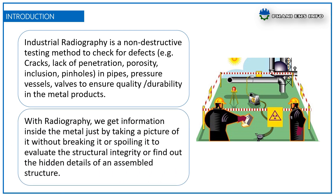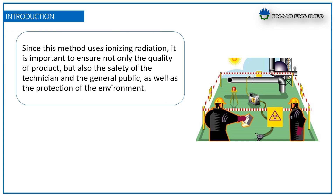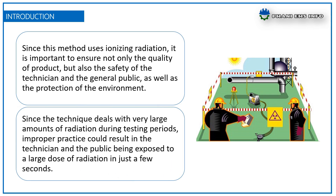With radiography we get information inside the metal by just taking a picture of it without breaking it or spoiling it, to evaluate the structural integrity or find out the hidden details of an assembled structure. Since this method uses ionizing radiation, it is important to ensure not only the quality of the product but also the safety of the technicians and general public, as well as protection of the environment.